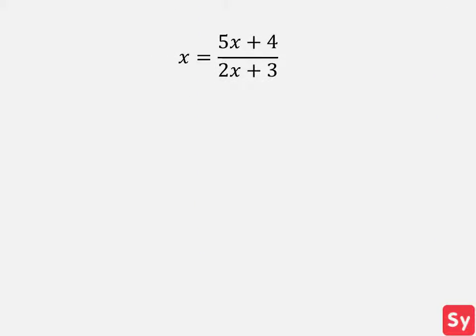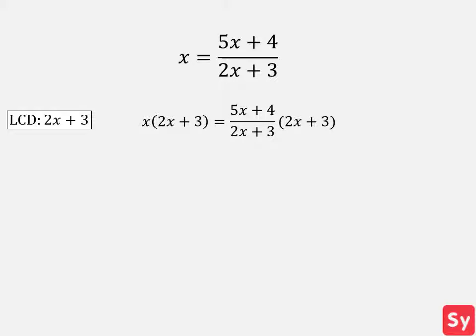Next example, we have x equals 5x plus 4 over 2x plus 3. We do not need to factor the denominator because it is in its simplest form. We know the LCD is 2x plus 3 because there is only one denominator. We multiply both sides of the equation by 2x plus 3. We simplify this and it equals 2x squared plus 3x equals 5x plus 4.